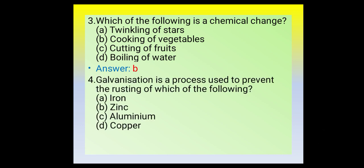Fourth question: galvanization is a process used to prevent the rusting of which of the following metals? Galvanization is a process used to prevent the rusting of iron. So our answer is option A: iron.